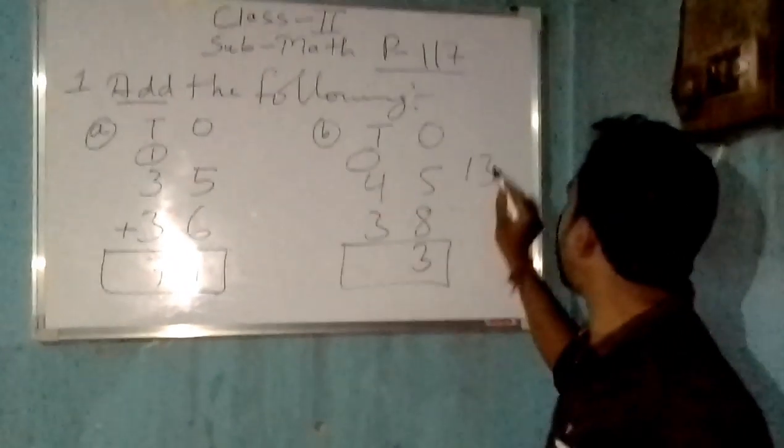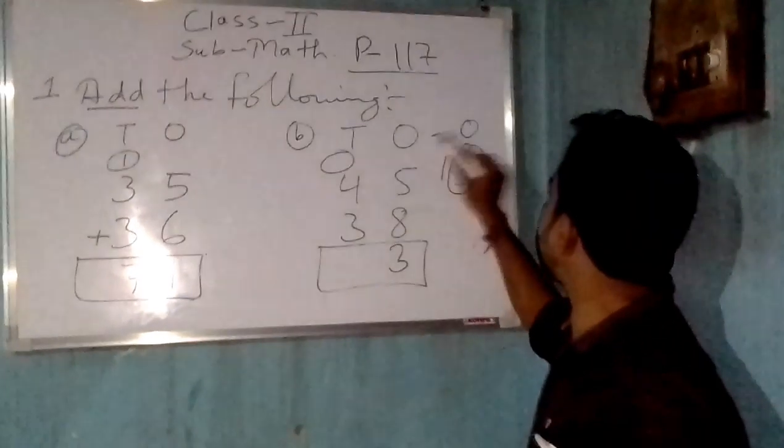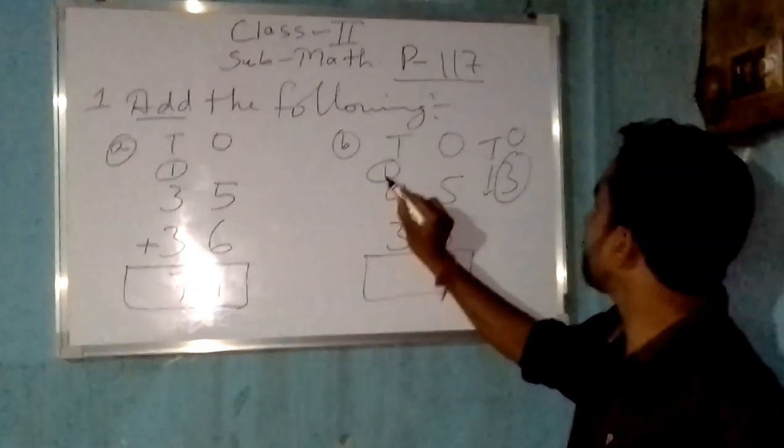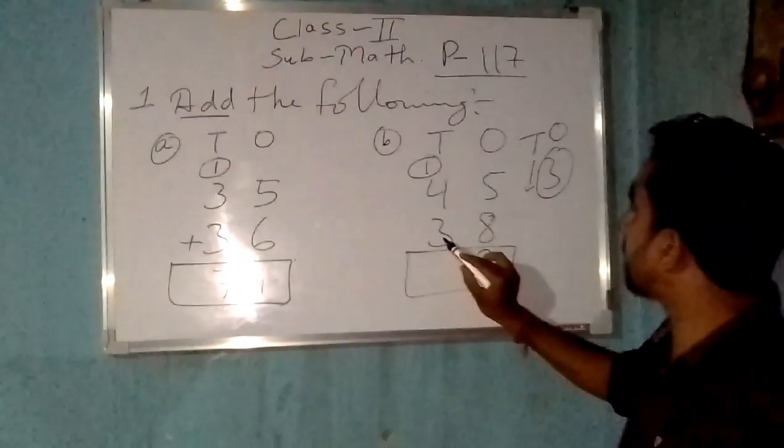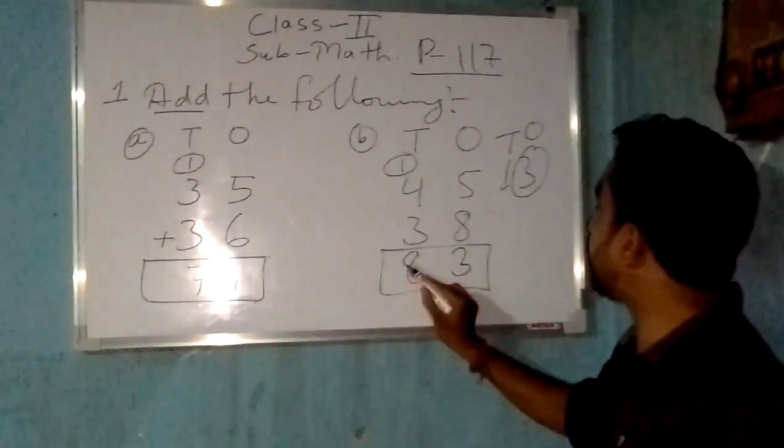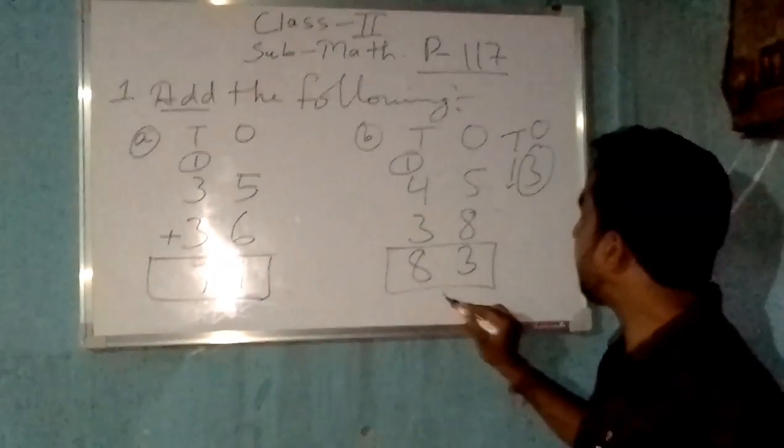When we write 13, this is in one place and this is in 10 place. So this 10 place number will be carried here. Now 4 plus 3 is 7 and this 1 is equal to how much? 8. So it is 8 in the 10s place and 3 in the 1s place. It means 83.